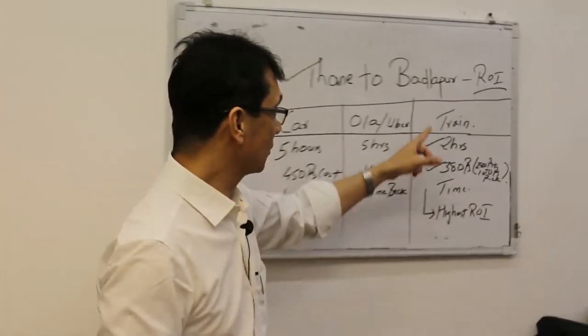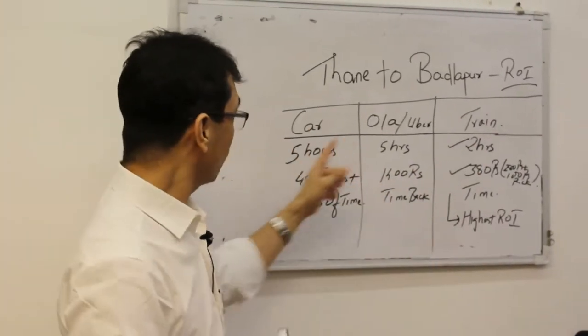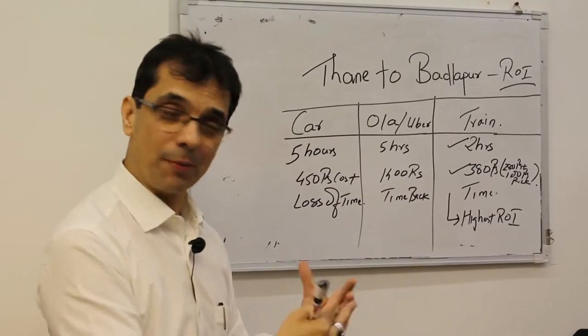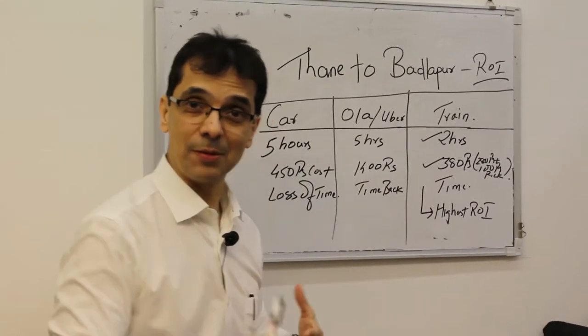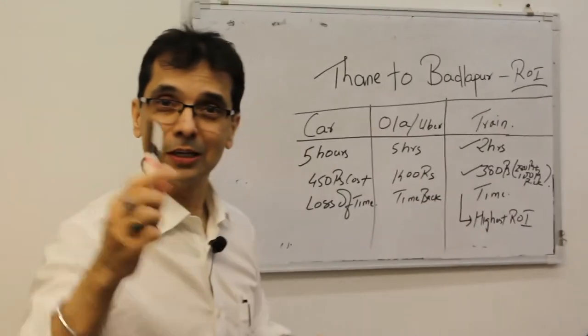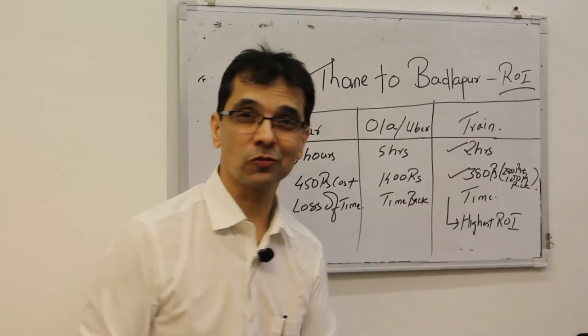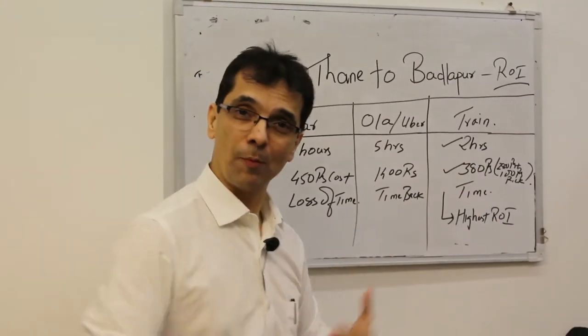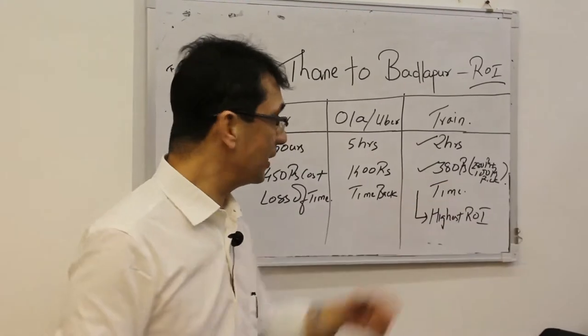My third option is a train. When I'm talking about this time, this is going and coming back, 2 hours a day. Huge saving of time. 380 rupees - first class ticket 280 rupees and 100 rupees by rickshaw from my home to the station. 380 rupees aane jane ka kharcha.